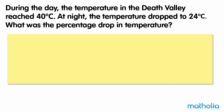During the day, the temperature in Death Valley reached 40 degrees Celsius. At night, the temperature dropped to 24 degrees Celsius. What was the percentage drop in temperature? 40 minus 24 equals 16, so the temperature decreased 16 degrees.